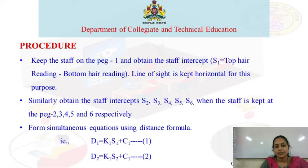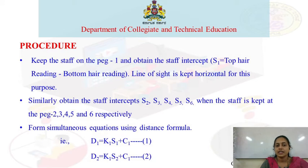From the observations, form simultaneous equations using the distance formula. The distance formula is D = KS + C, where D is the distance, K is the multiplying constant, S is the staff intercept, and C is the additive constant.